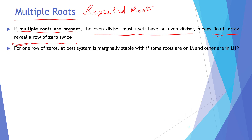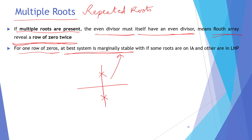For repeated roots, system stability reveals the following: if we have one row of zeros, the best case is that the system is marginally stable — for example, if conjugate pairs exist on the imaginary axis (IA) and others are in the left-half plane (LHP). If some roots are on IA and others in LHP, then the best the system can be is marginally stable.